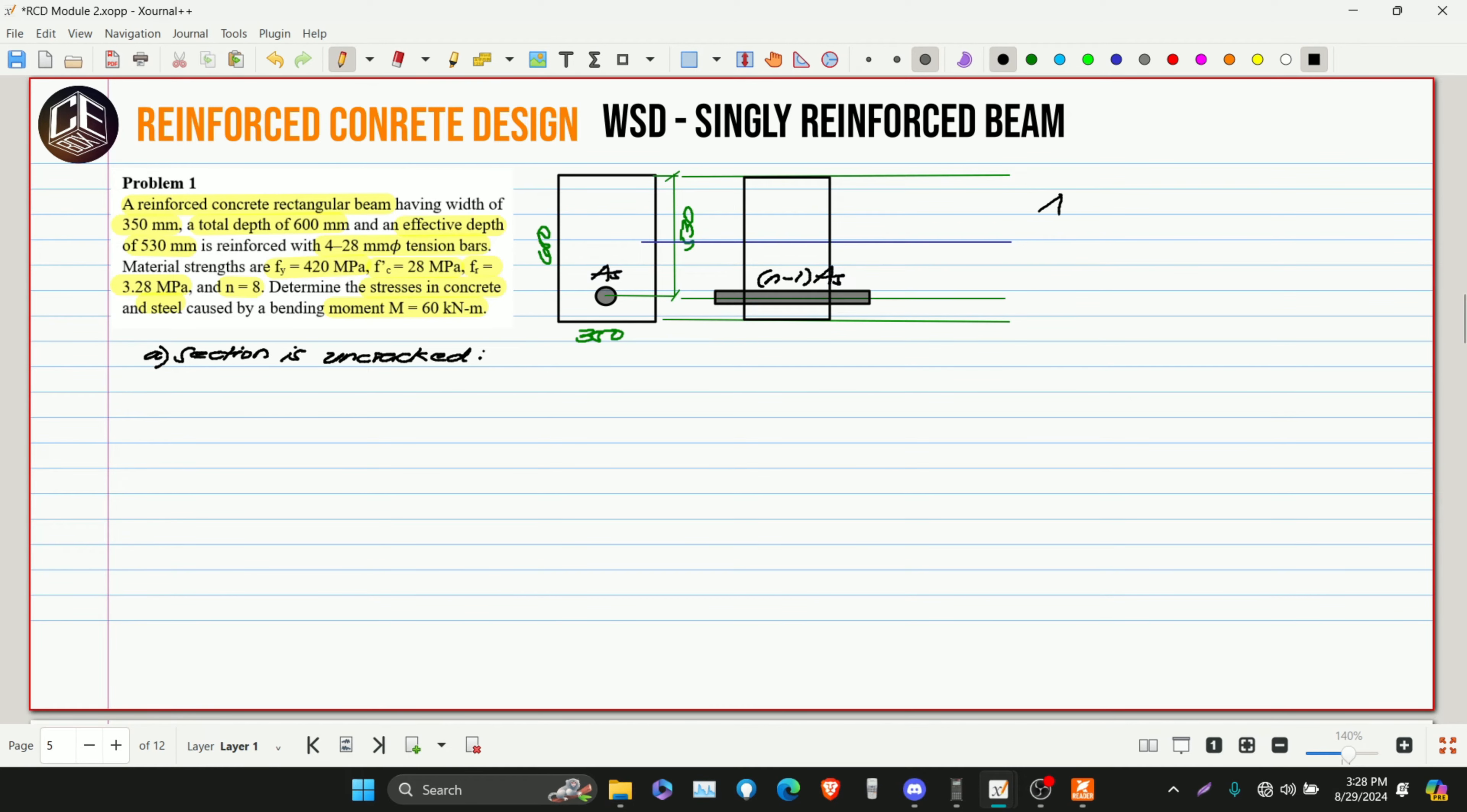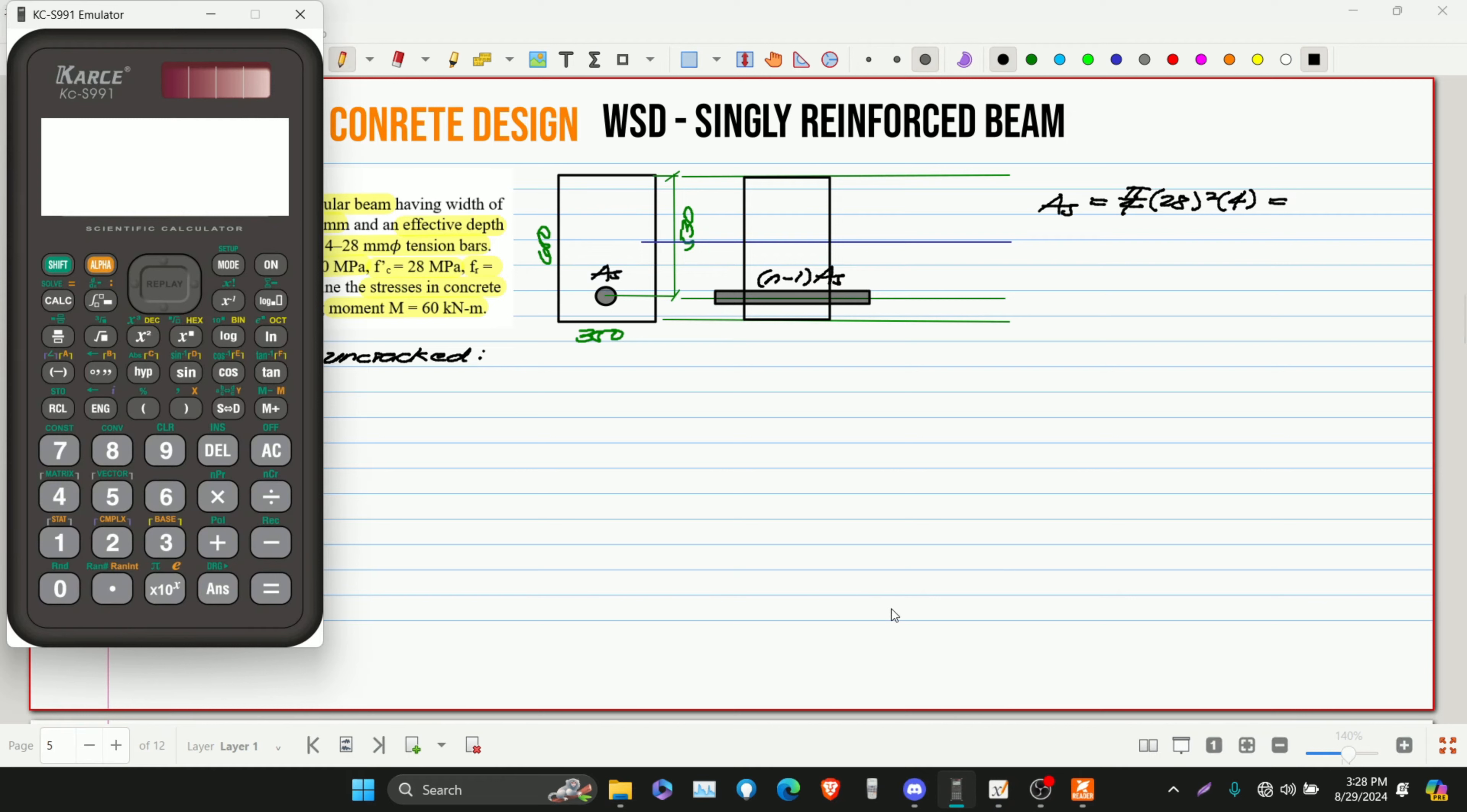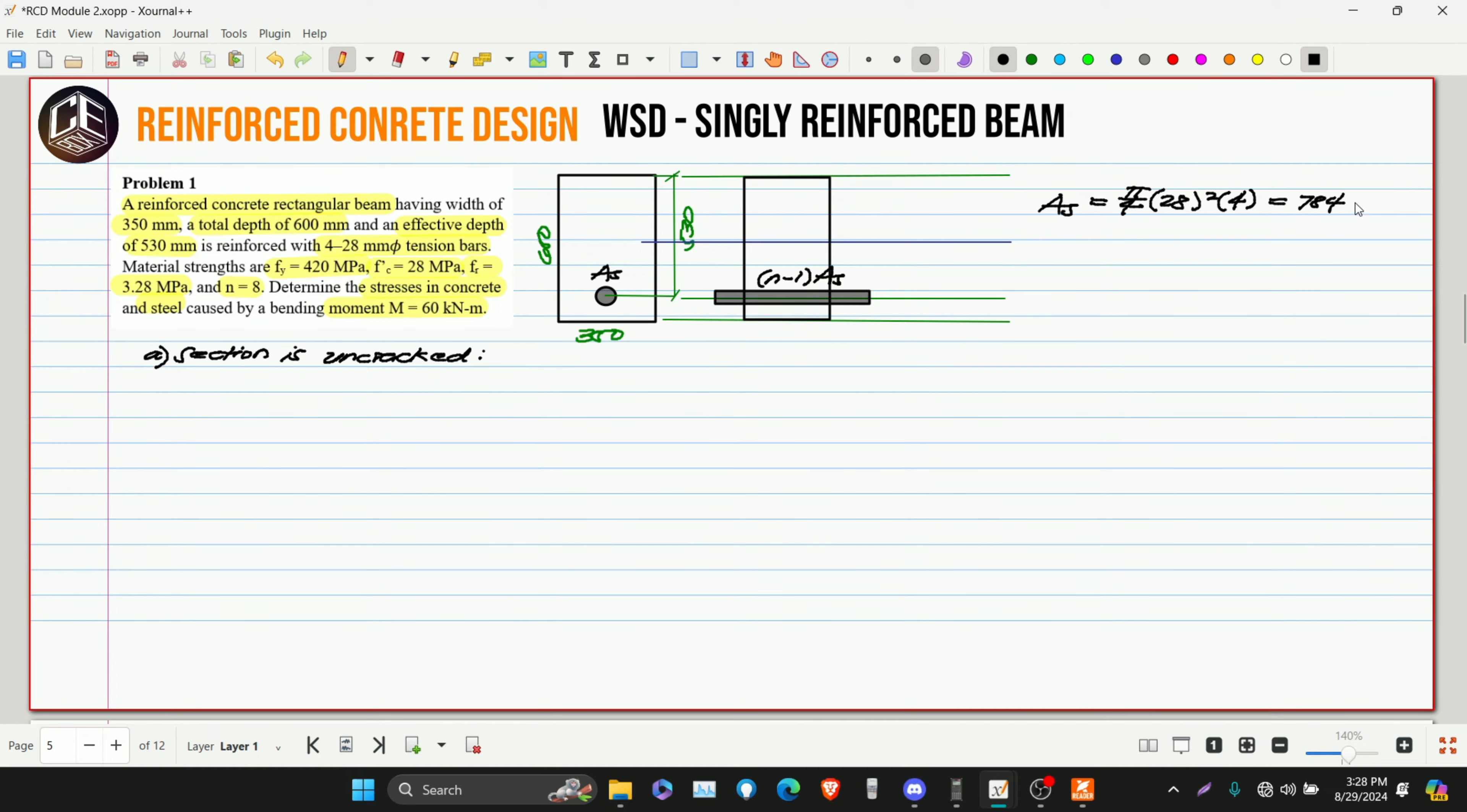Let's solve for AS. AS is equivalent to pi over 4 multiplied by 28 squared multiplied by 4. Cancel the 4, so what remains is 28 squared multiplied by pi. This is 784 pi millimeter squared.